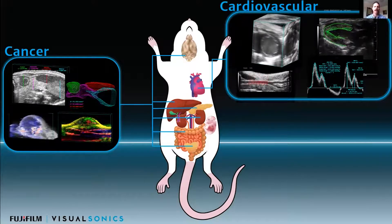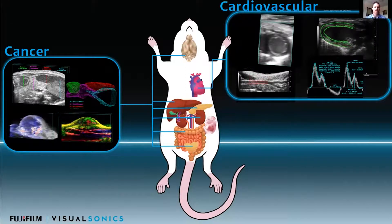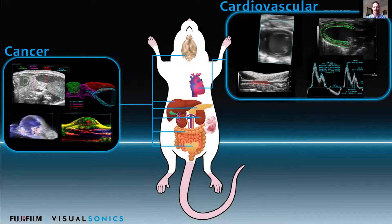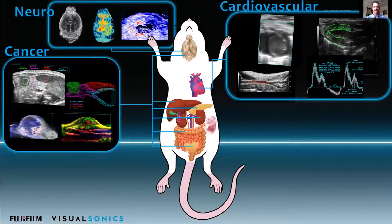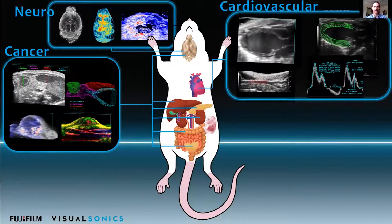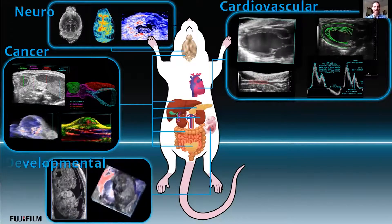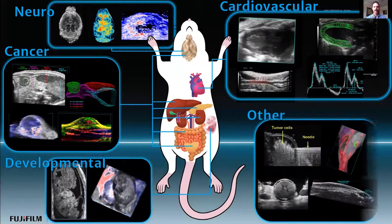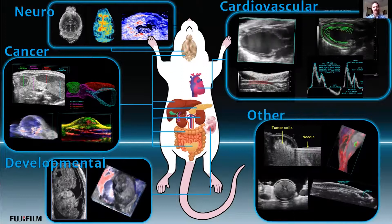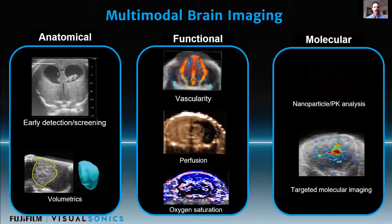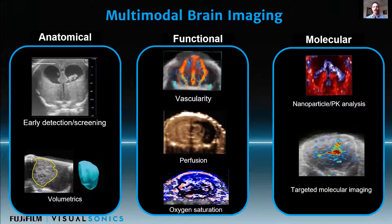There are also applications in cancer imaging, looking at volumes, vascularity, perfusion, and oxygen saturation. Of course, neuro is what I'm going to be focusing on today, though there are other applications as well in developmental biology and many others. I'm going to be zooming in on that brain imaging functionality today.